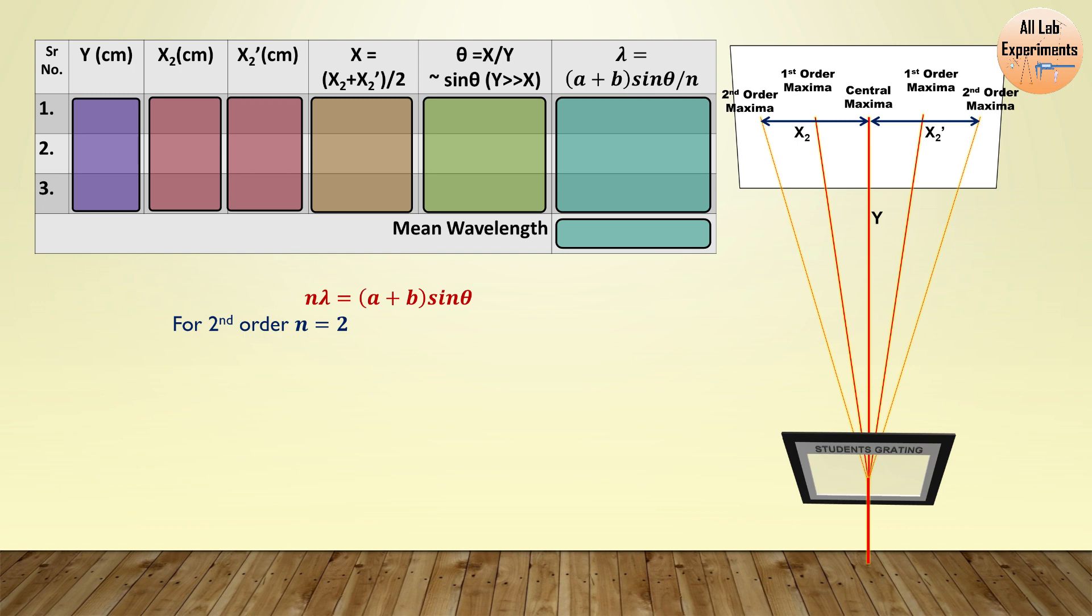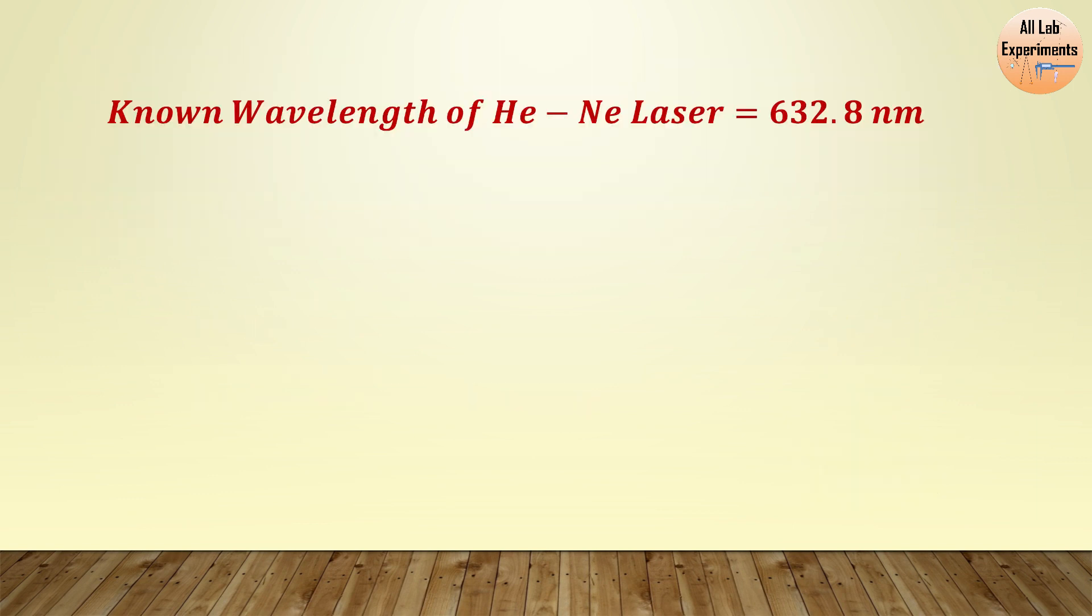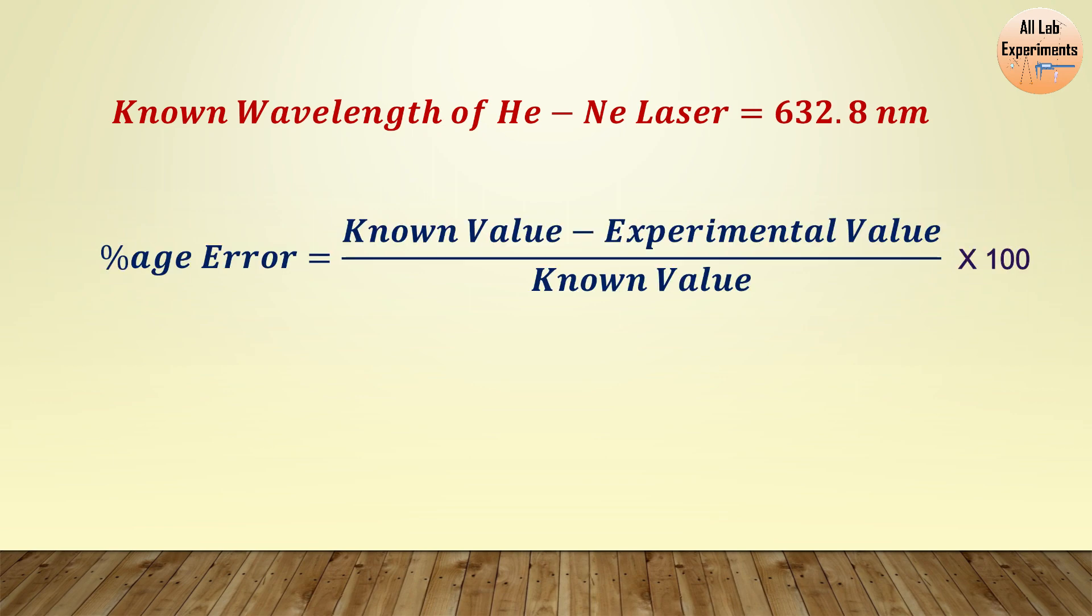Now if you have calculated this for both first order and second order maxima, so at the end you can find mean of both the outcomes. Now we know that the known value of helium neon laser is 632.8 nanometer and we can also find the percentage error using this formula of known value minus experimental value divided by known value into 100. In this way you can perform this experiment quite easily.